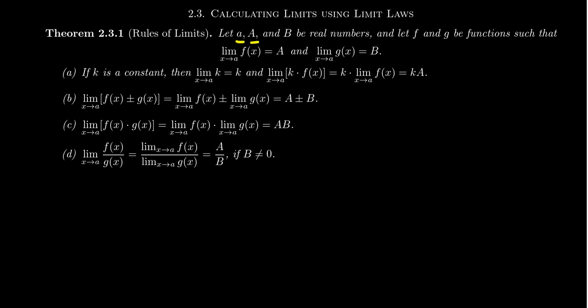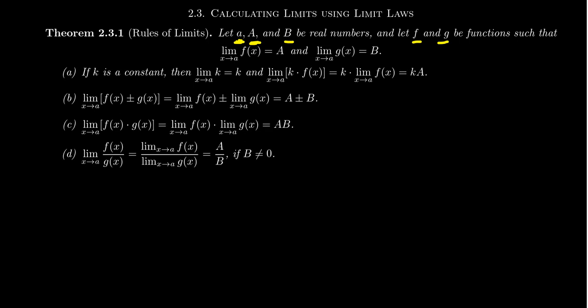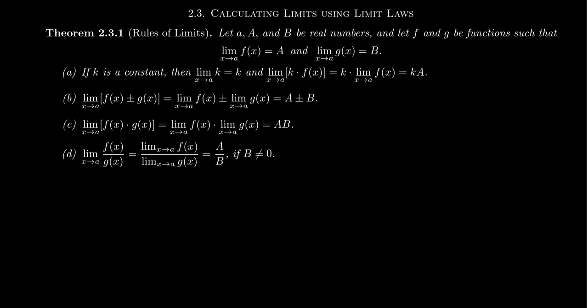Let the number little a, capital A, and capital B be real numbers. You'll notice I'm using little a and capital A — this is quite common in mathematics where variables are case sensitive. If you're talking about little f, that's not the same as capital F. So when you write your mathematical notation, do make sure you are case sensitive. Little f and little g will be functions. Let the following statements be true: the limit as x approaches little a of f(x) will be capital A, and the limit as x approaches little a of g(x) will be B. In order for these limit laws to be true, we have to be approaching the same value — x equals a.